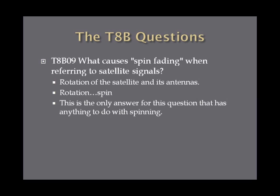What causes spin fading when referring to satellite signals? Spin fading is caused by the rotation of the satellite and its antennas. As the satellite spins, the antennas are changing direction, which can cause some fading. The key thing to remember is rotation and spin — of all the possible answers, this is the only one on the exam that has anything to do with spinning.